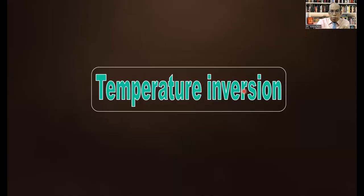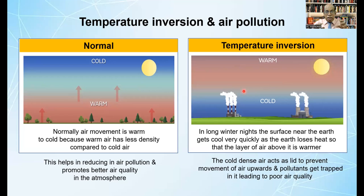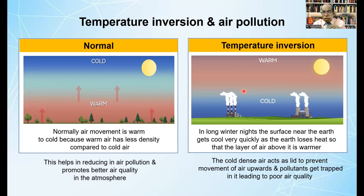Temperature inversion is also a very important phenomenon. Normally, the movement of air is warm to cold, because warm air has less density compared to the cold air above, and this helps in reducing air pollution and promotes better air quality. But in long winter nights, the surface air cools very quickly as the air loses heat. So the layer just above the surface is warmer, and the layer above this warm air is cold, and this cold air acts as a lid to prevent movement of air upwards, and the pollution gets trapped, leading to poor air quality.